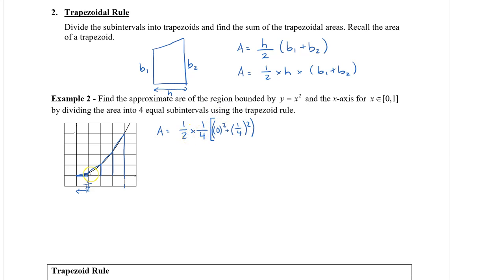For each of the trapezoids there's going to be a factor of one-half and they all have a width of one-quarter. So instead of writing this out four times, I'm going to factor out that one-half and one-quarter to the front, and then I just need to write down all the b1s plus b2s.